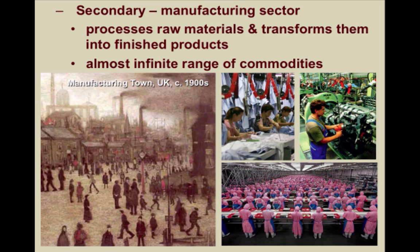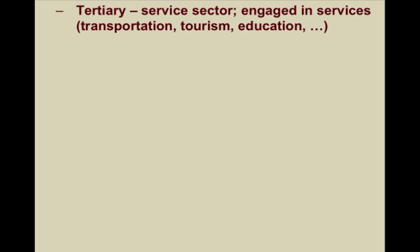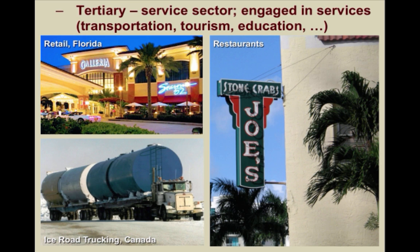In the United States, more than 19% of all people are working in the manufacturing sector. Moving on to the service sector, which really involves more than just tertiary activities. These are jobs where people are engaged in services such as transportation, tourism, and education. So if you're driving a truck, operating a cash register, or waiting tables, those are all examples of tertiary economic activities. In the United States, more than 80% of people are involved in tertiary economic activities.